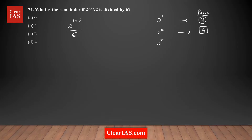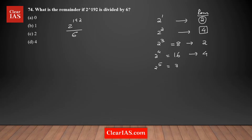The next power is 2 to the power 3, which is 8. When you divide 8 by 6, the remainder is 2. Then 2 to the power 4 is 16 — dividing by 6, the closest multiple is 12, so the remainder is 4. For 2 to the power 5, which is 32, when you divide by 6 the remainder is 2. So you can see a pattern forming.